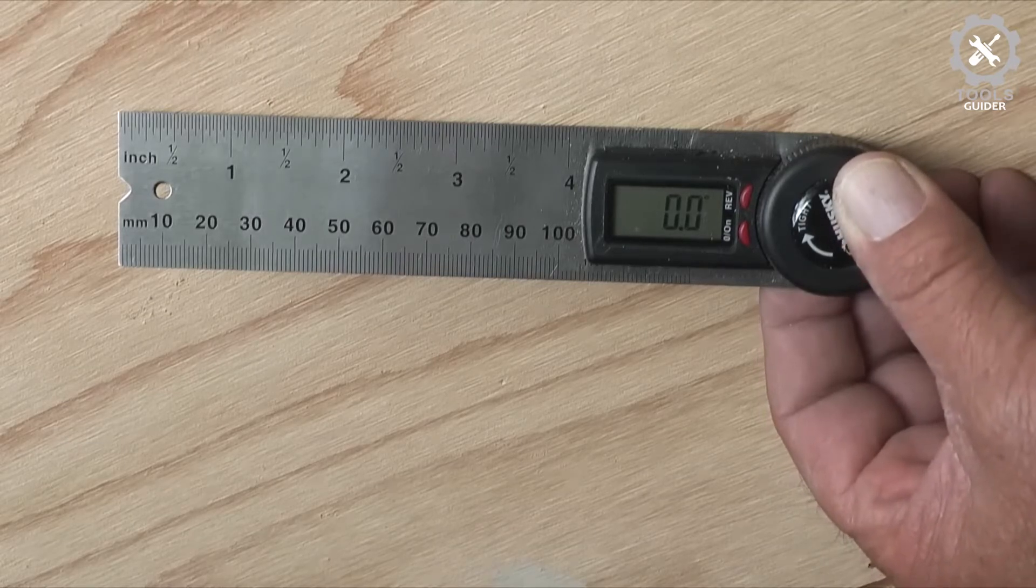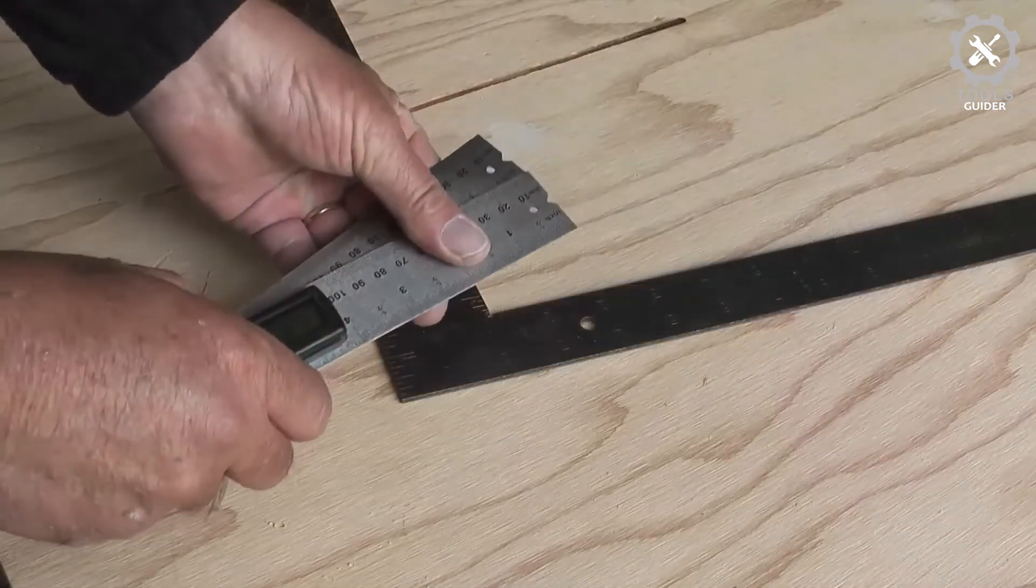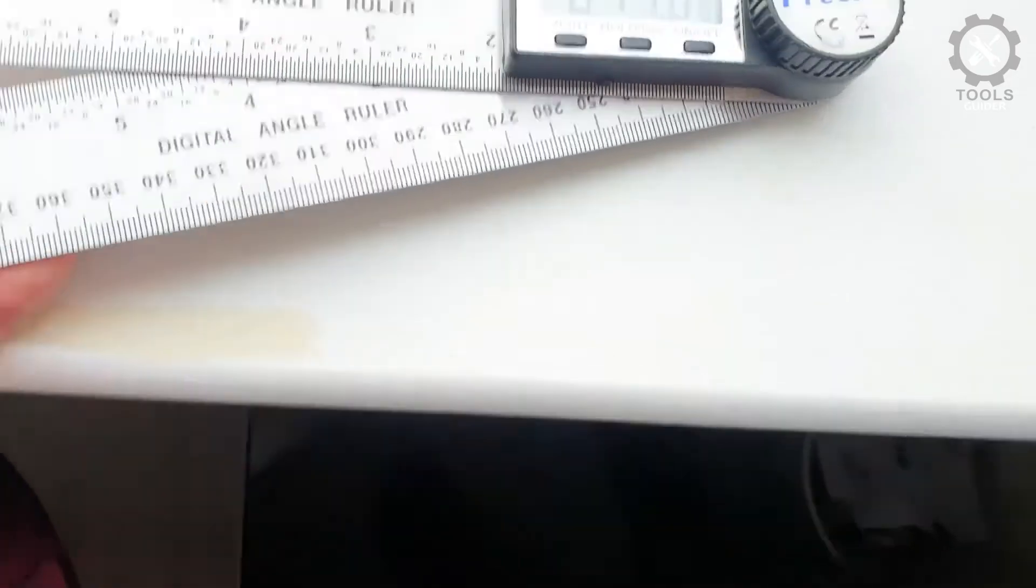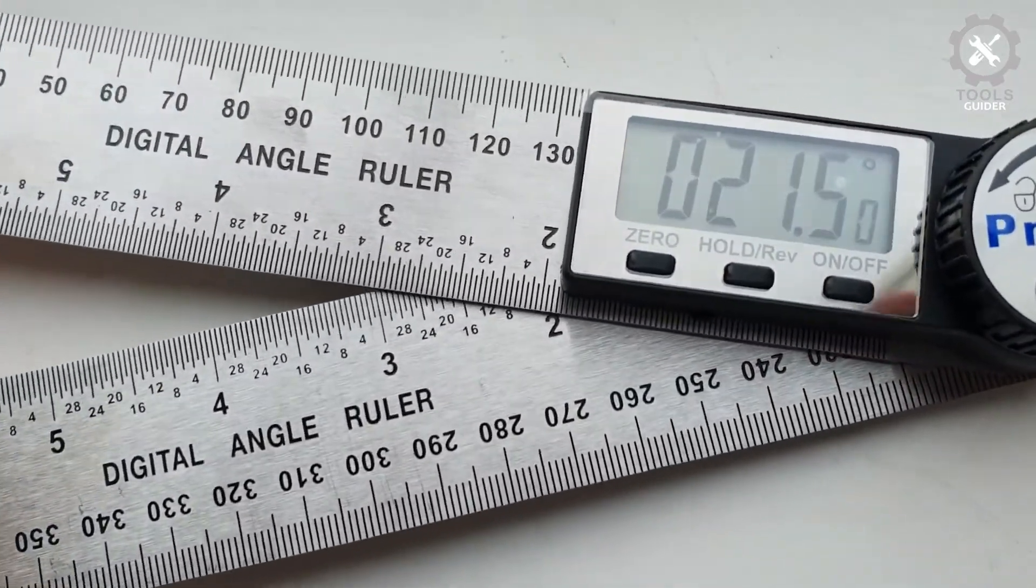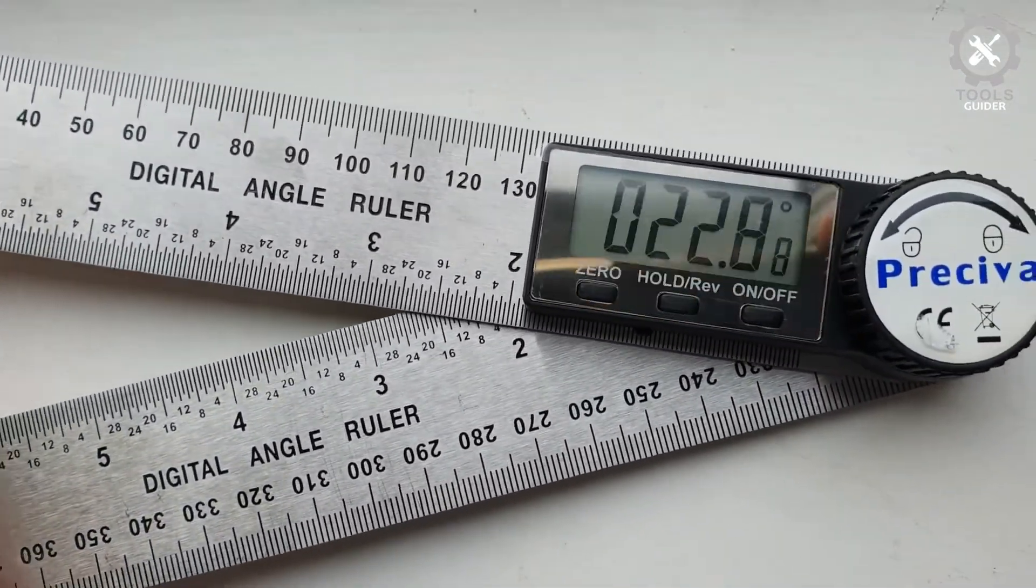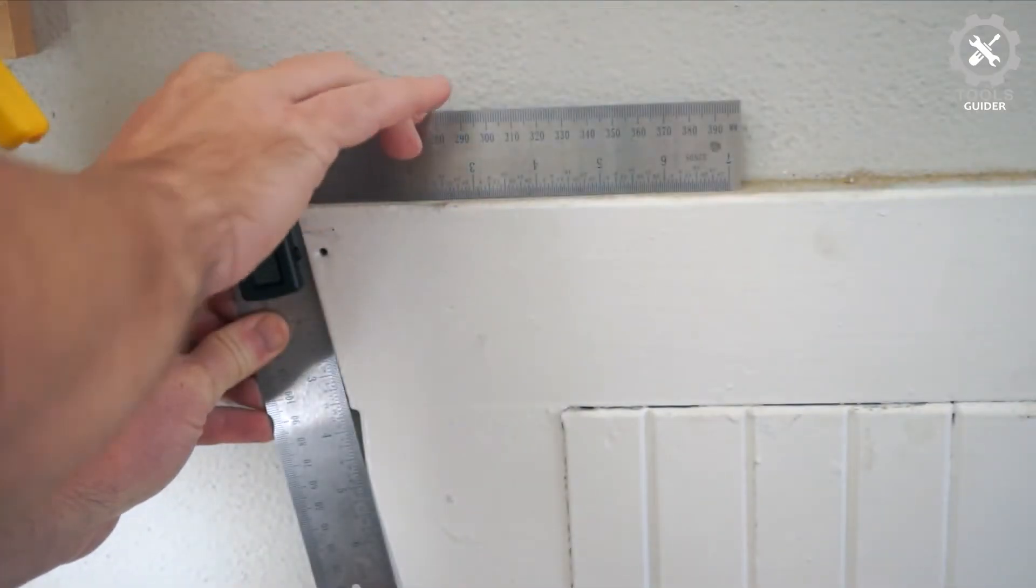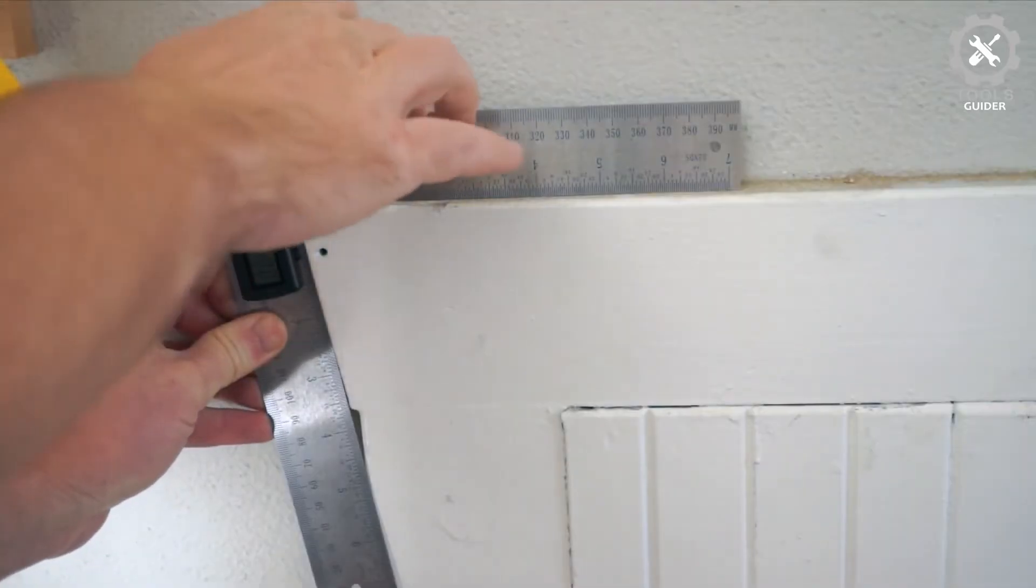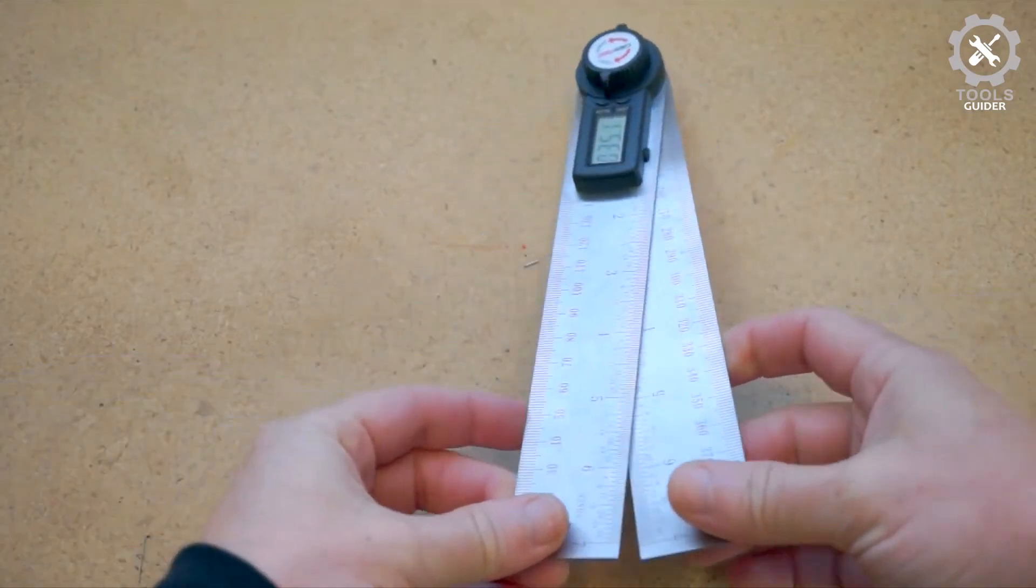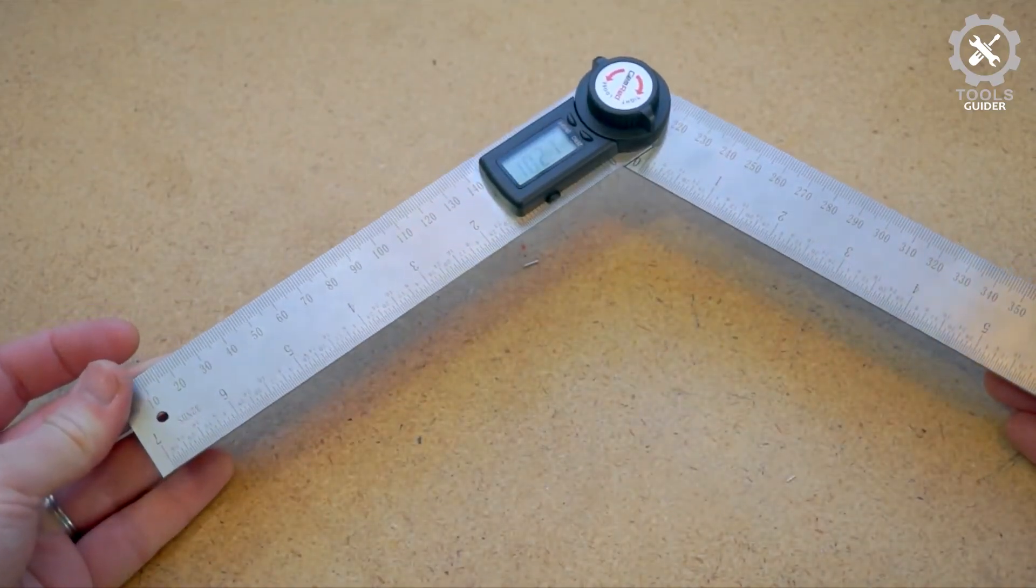Moreover, the device can measure both metric and standard scales. It also allows relative and absolute angle measurements. The hold and reset function minimizes power consumption, and the included battery is usable for 2000 hours. The auto shutoff feature closes the device after 6 minutes of inactivity.